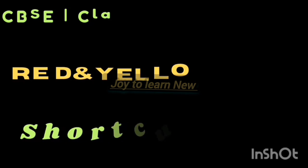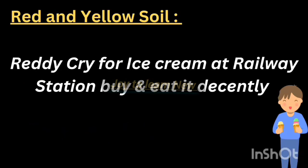The first shortcut is: 'Ready, cry for ice cream at railway station. Then buy it and eat it decently.' Let's see what each word represents.